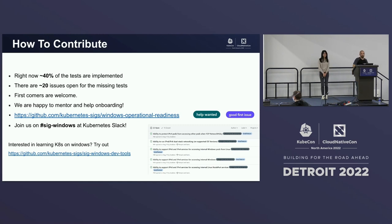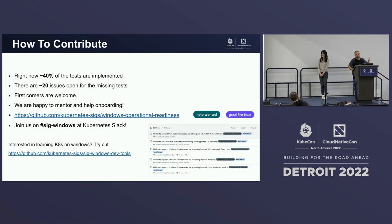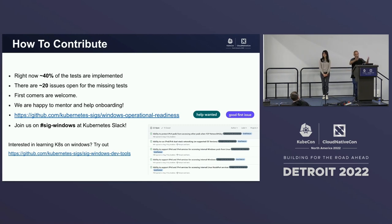How to contribute: if you're interested in helping move Windows forward and testing Windows, there's a lot of work to do. Right now about 40% of the tests defined in the KEP are implemented. There's an open ticket for each missing test. Check the project at Kubernetes SIG Windows operational readiness, pick an area you're interested in, use Windows Dev Tools to bootstrap your first cluster — on Vagrant, AWS, or vSphere. Join us on SIG Windows and Kubernetes Slack. We're here to help anyone onboard and start contributing.